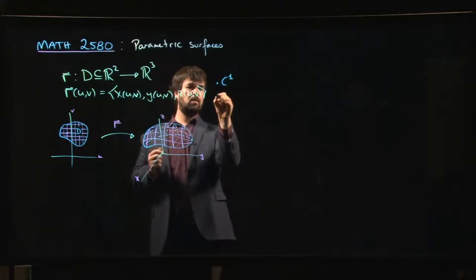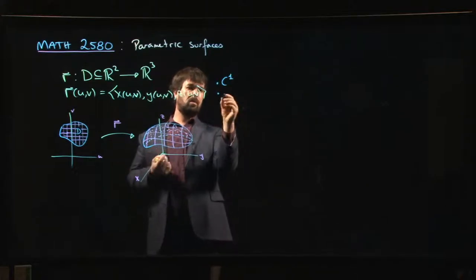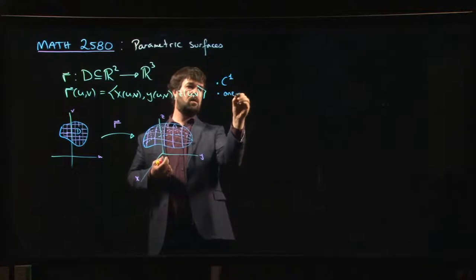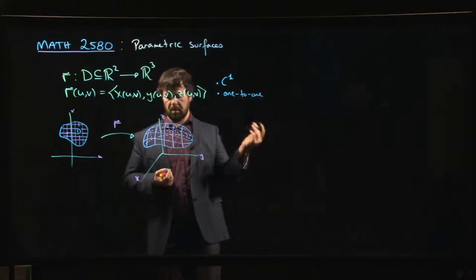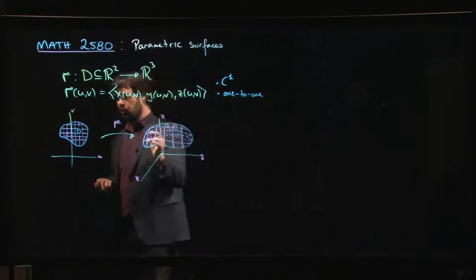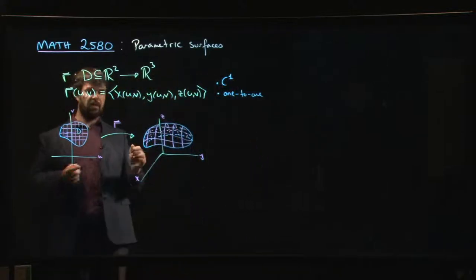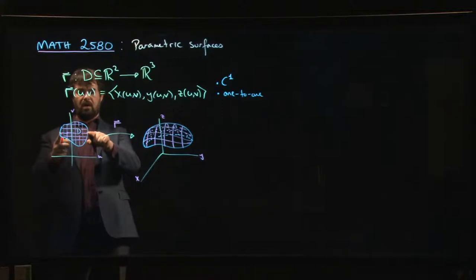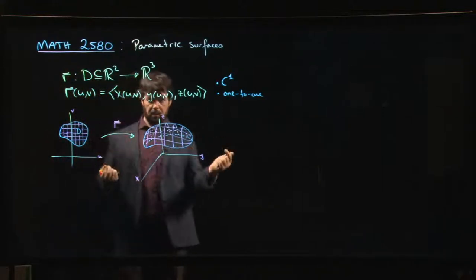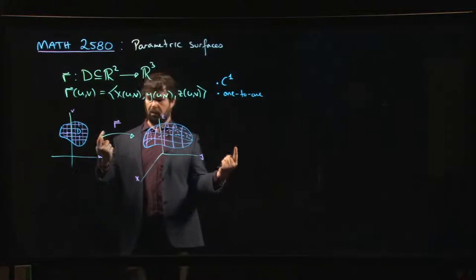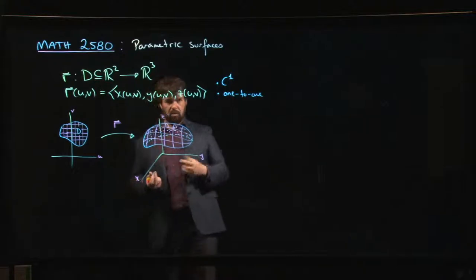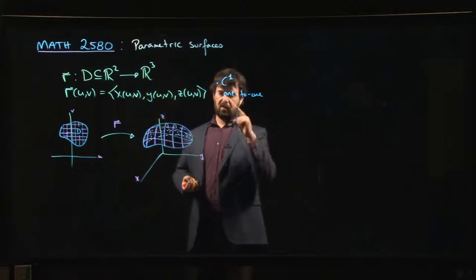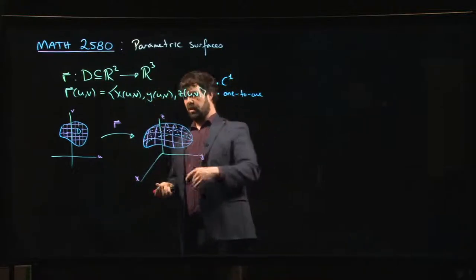It should probably be one-to-one. Maybe there are some things you relax along the boundary. You might want to have something where maybe two sides of the boundary map to the same point because you want to parameterize a sphere or a cylinder and wrap things around so they join up. So maybe one-to-one at least on the interior.